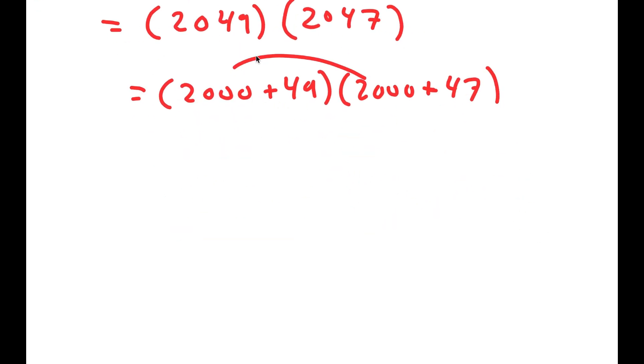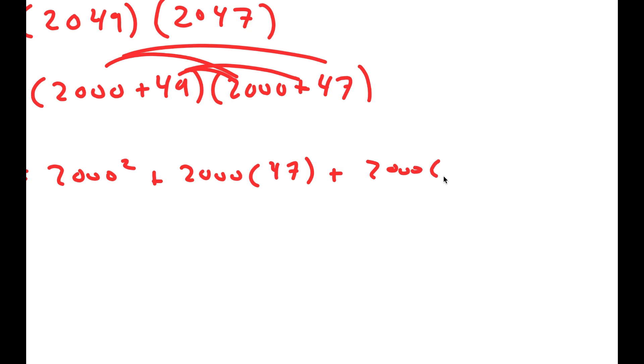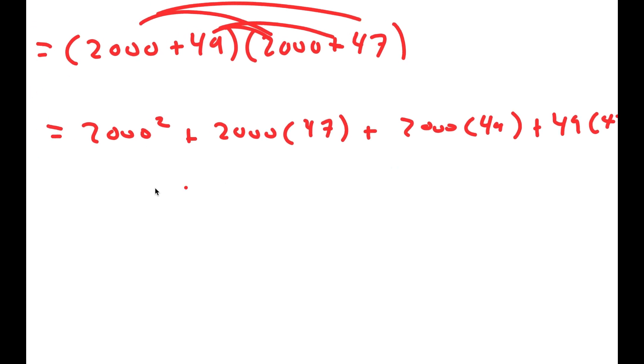And now I'm going to distribute, so I get 2,000 squared plus 2,000 times 47 plus 2,000 times 49 plus 49 times 47.